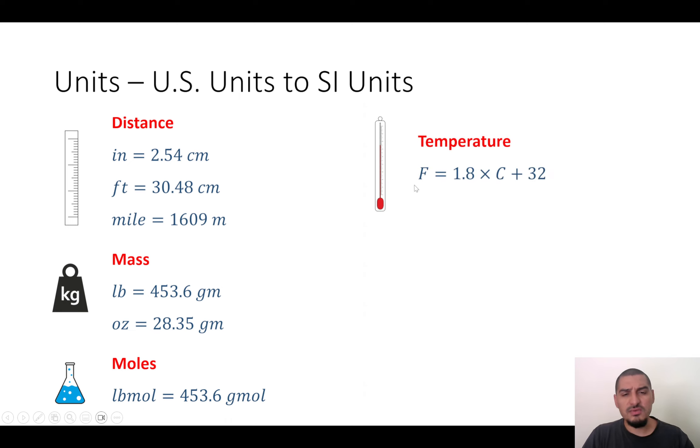This is, again, a famous conversion from Celsius to Fahrenheit. You multiply by 1.8 and then add 32, the gallon to liters, and then the pressure, one atmosphere is 14.696 psi, which is the pound per square inch.